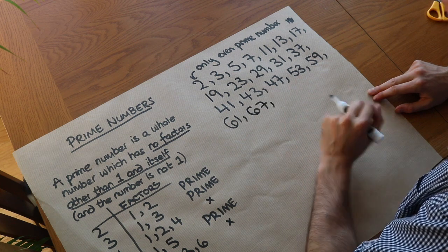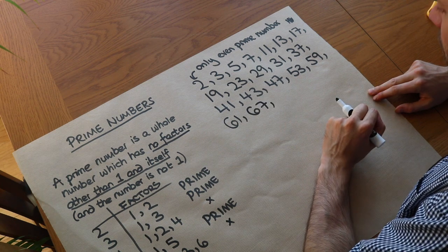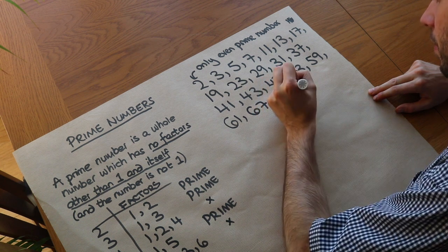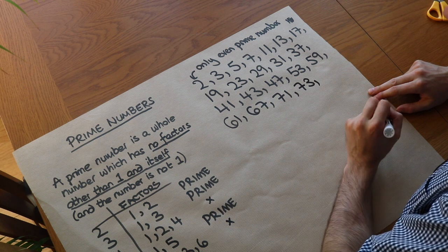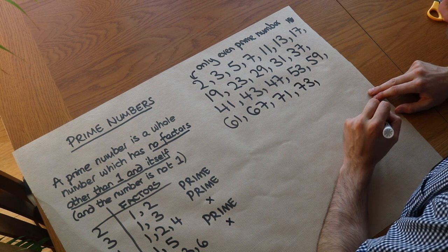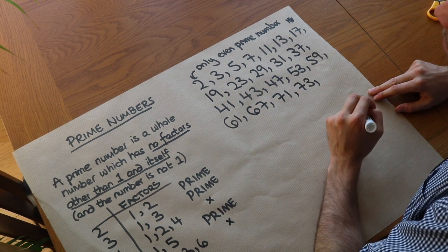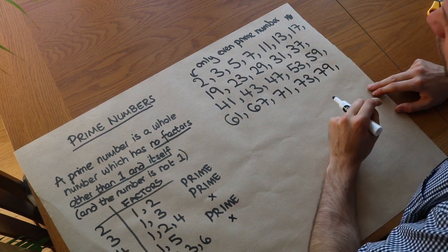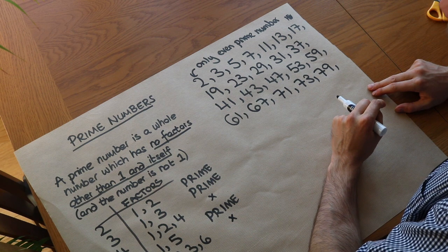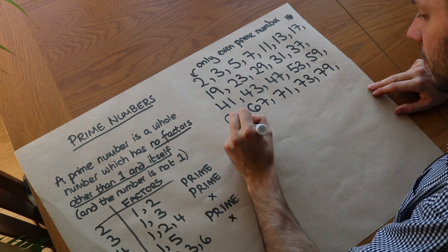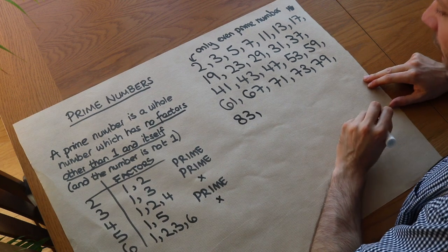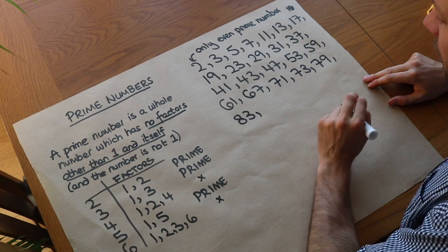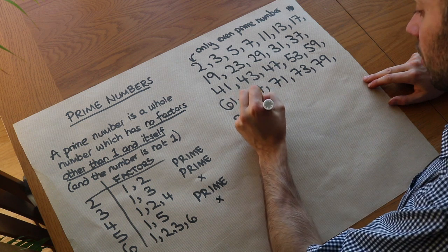Sixty-nine: the digits add up to 15, which is a multiple of three — not prime. Seventy-one is prime. Seventy-three is prime. Seventy-five ends with a five — not prime. Seventy-seven is obviously divisible by seven — not prime. Seventy-nine is prime. Eighty-one: digits add up to nine, a multiple of three — not prime. Eighty-three is prime. Eighty-five ends with a five — not prime. Eighty-seven: digits add up to 15 — not prime. Eighty-nine is prime.